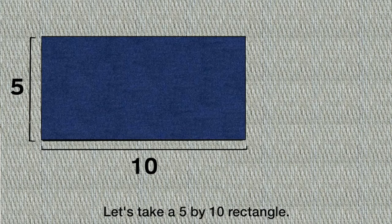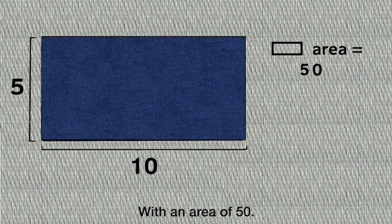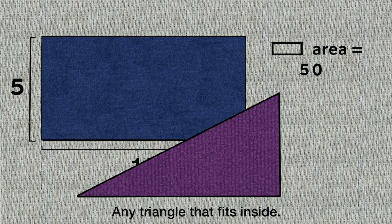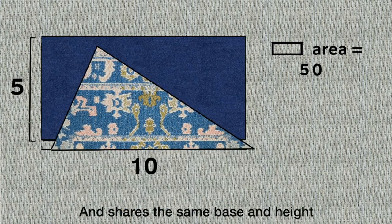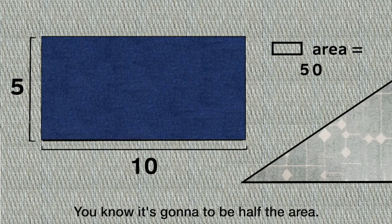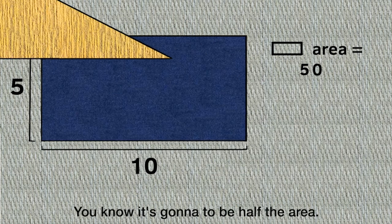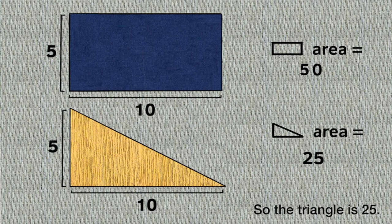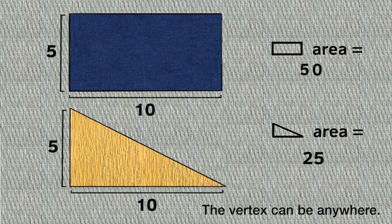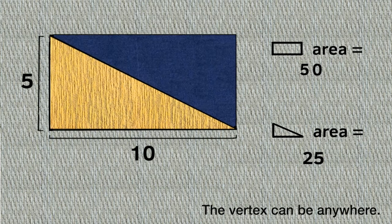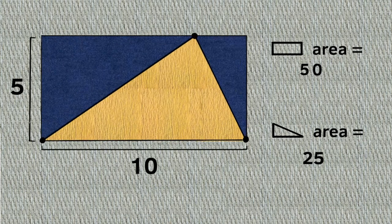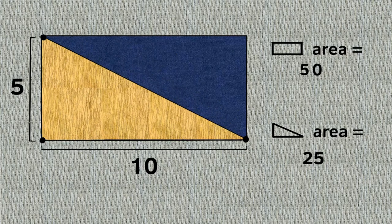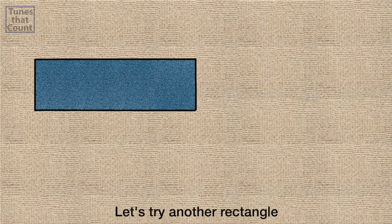Let's take a 5 by 10 rectangle with an area of 50. Any triangle that fits inside and shares the same base and height, you know it's gonna be half the area. So the triangle is 25. The vertex can be anywhere, as long as the base and height are shared. Let's try another rectangle.